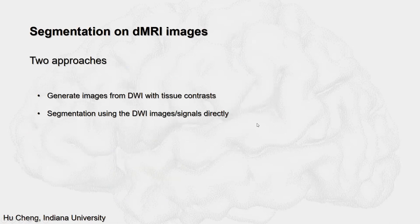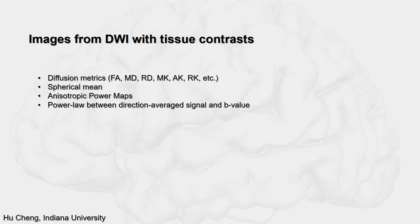Roughly speaking, there are mainly two approaches for segmentation on dMRI images: either by generating images from DWI with tissue contrasts, or using the DWI images or signals directly. There are many ways to generate images with tissue contrasts from dMRI data. I will go through four of them: the diffusion matrix from DTI or DKI, the spherical mean, and the isotropic power map, and the power-law relationship between direction-averaged signals and b-values.